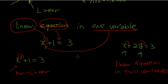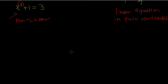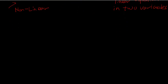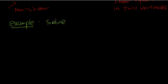In the beginning of this chapter, we are only going to deal with linear equations in the one-variable case. The most basic example we can think of regarding linear equations in one variable is: solve the equation. Let's try a couple of examples. Let's say 3x minus 2 equals 7. The first thing we should do is isolate the term with the variable x.